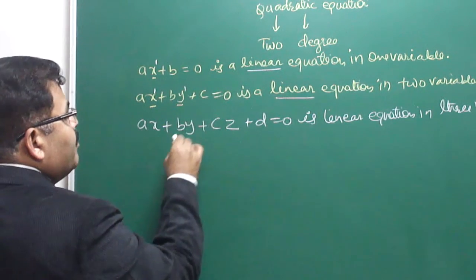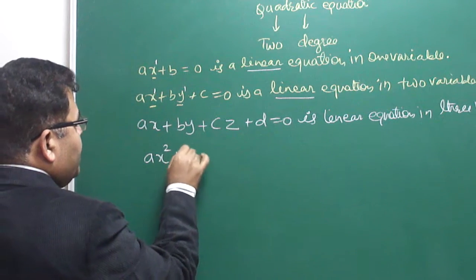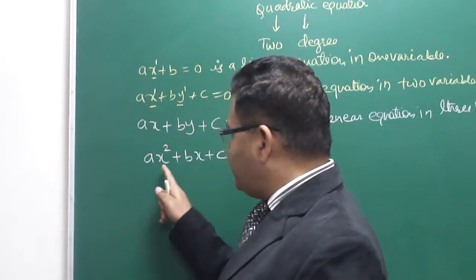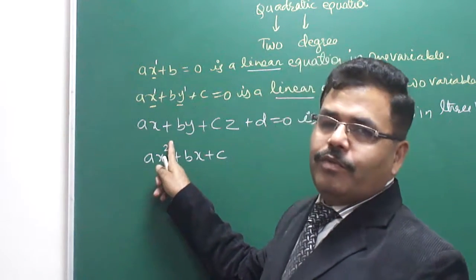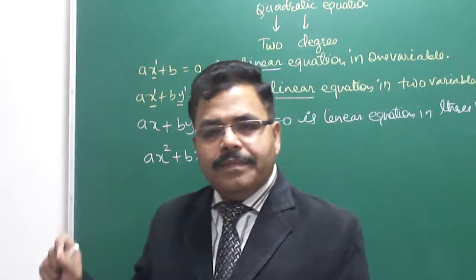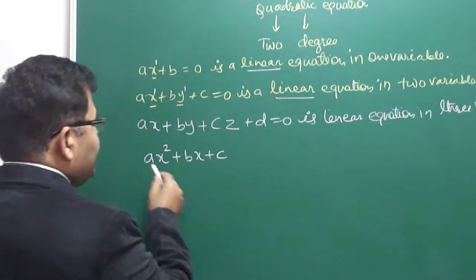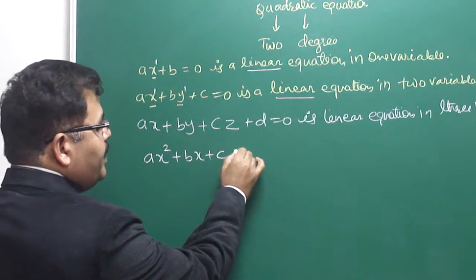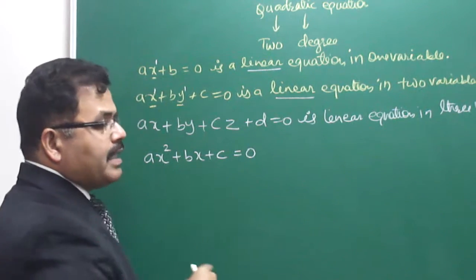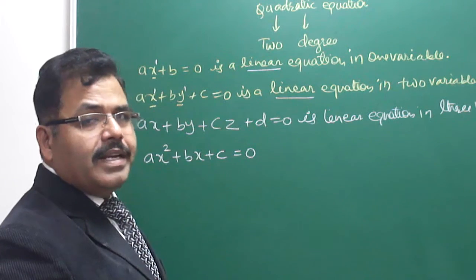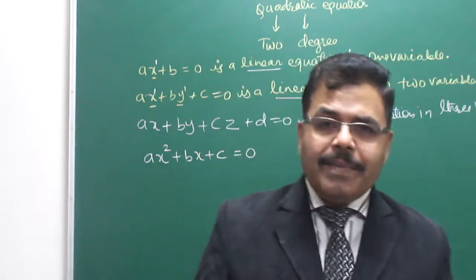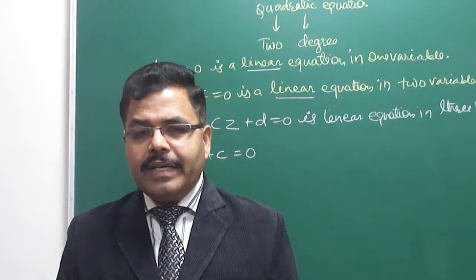What is a quadratic equation? The degree must be 2. ax² plus bx plus c — here the degree is 2, x is the variable, and the maximum power is 2, so it is quadratic. But is this an equation? No, this is not an equation — this is an expression. It can be written as an equation if and only if it is equated to something, maybe 0, maybe any constant, but there must be an equal to sign.